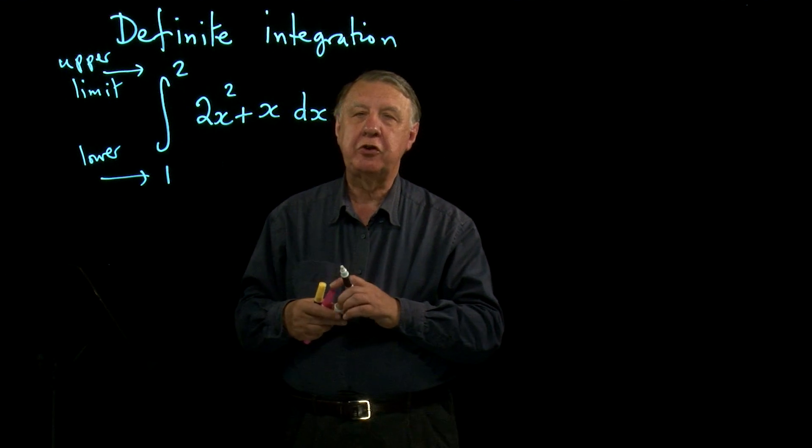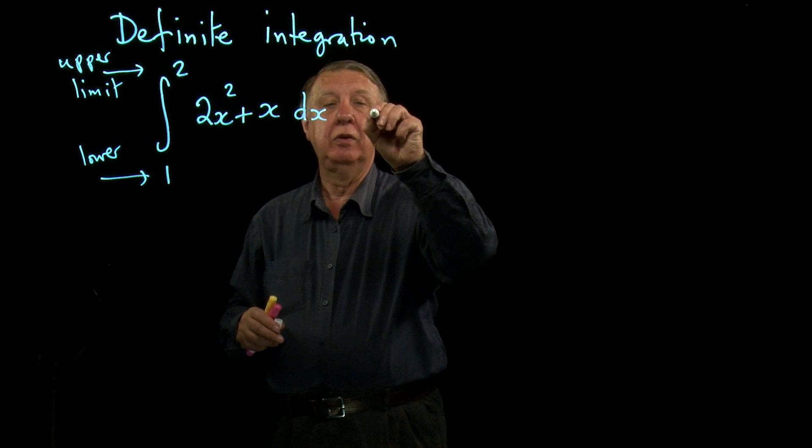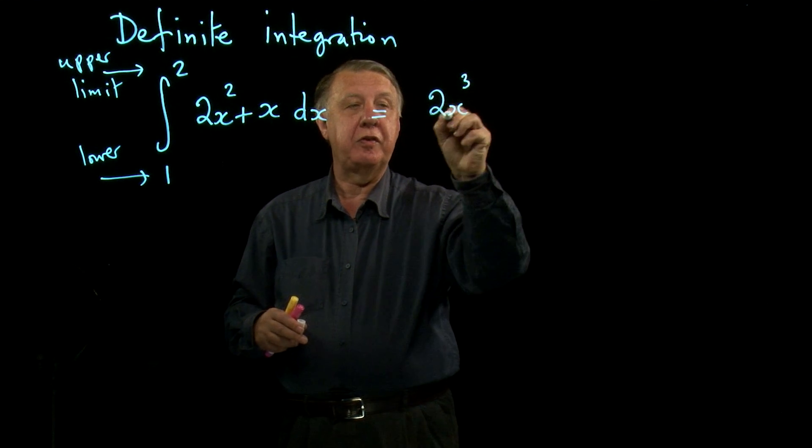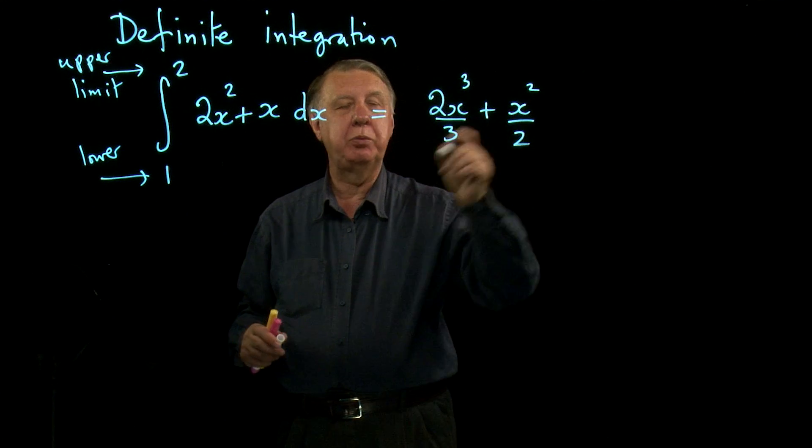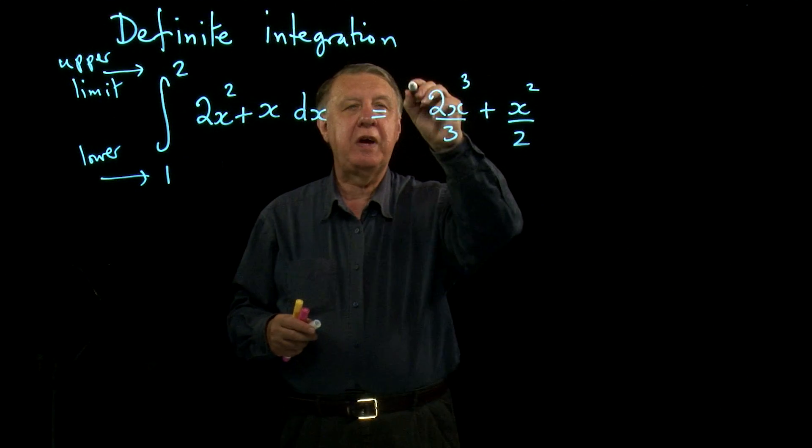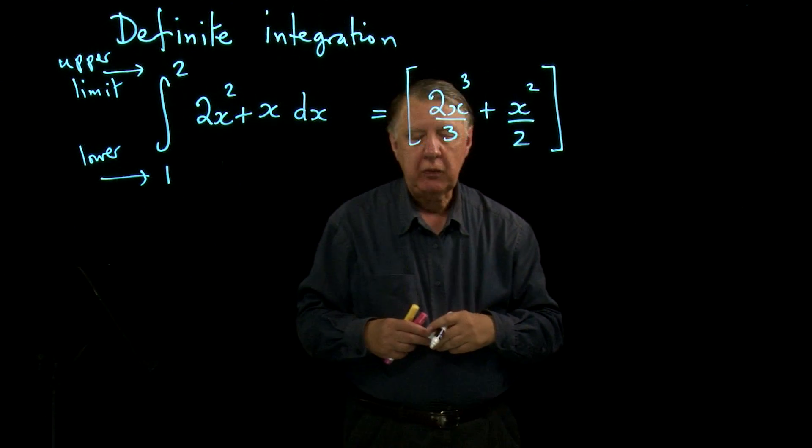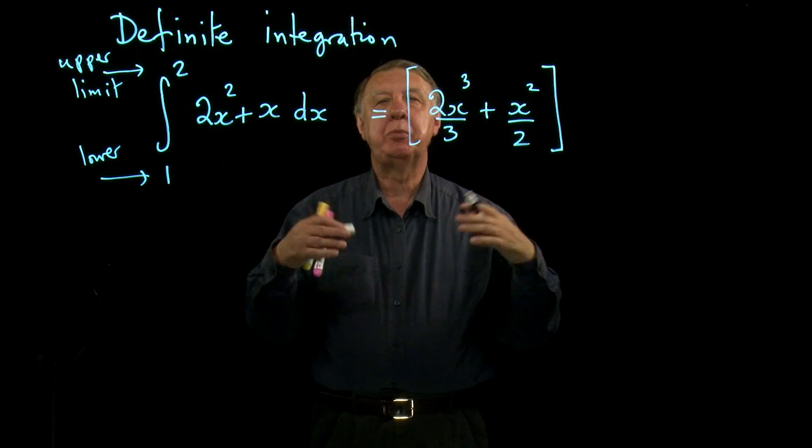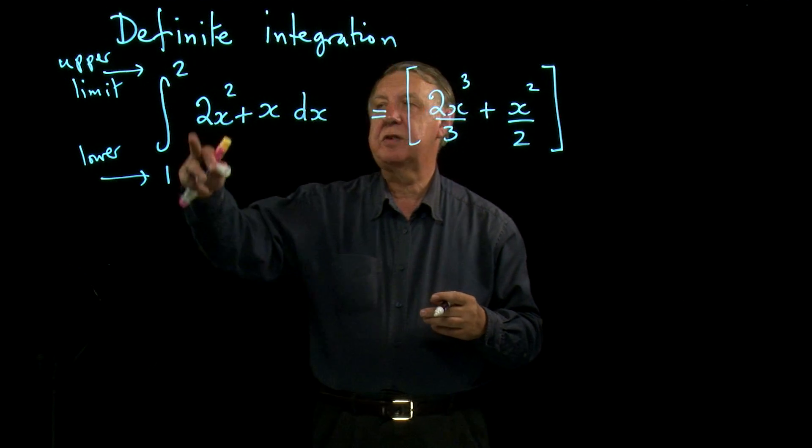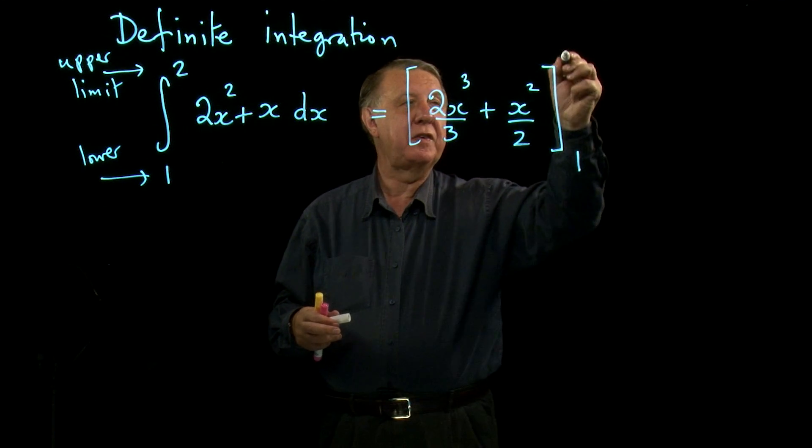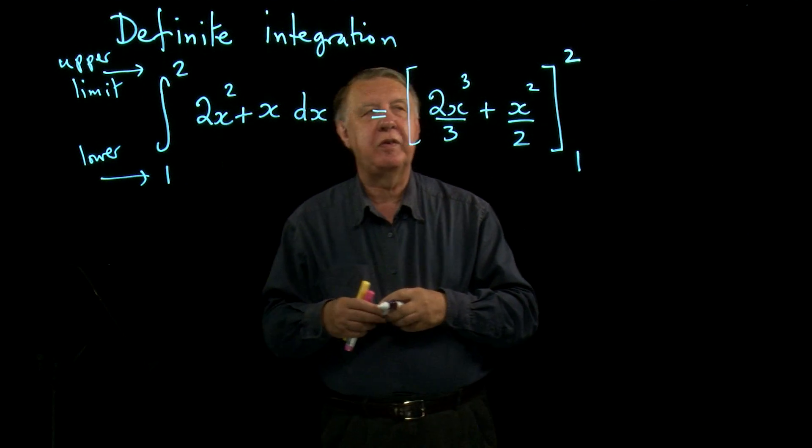Now the first thing you do is to do the integral. So 2x cubed over 3 plus x squared over 2. Now this time because it's a definite integral we don't put in the plus C. Instead we put a set of square brackets. It's absolutely conventional notation - you have to do it this way. And we take the limits and again we put them this time on the other side. That's the convention. They're put there.